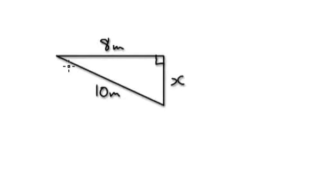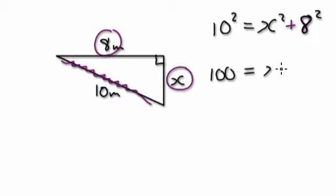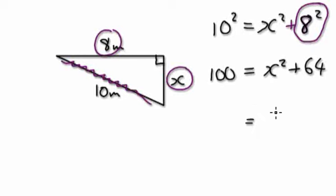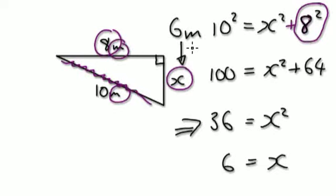Next example. Again, the hypotenuse is always on its own. So this one would be 10 squared equals x squared plus 8 squared. This becomes 100 equals x squared plus 64. Now take away 64 from both sides, giving 36 equals x squared. Now square root both sides: 6 times 6 is 36, so x equals 6. The units are meters, so x equals 6 meters.